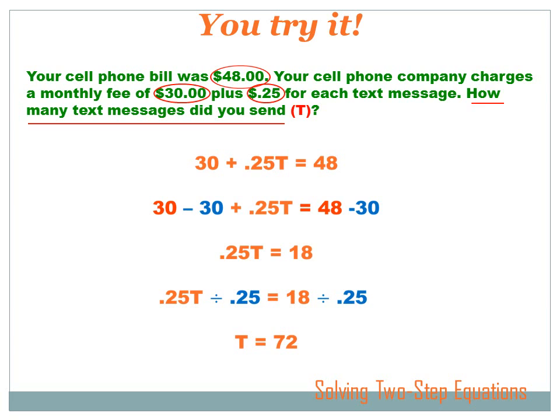It's a two-step equation. Let's get rid of this 30 first because that's a plus or a minus. And to get rid of a plus 30 I need a minus 30. And if I'm going to subtract 30 from the left side I sure better subtract 30 from the right side or it won't be equal any longer. So on the left side 30 minus 30 is zero. So it leaves just .25 T. And on the right side 48 minus 30 equals 18.